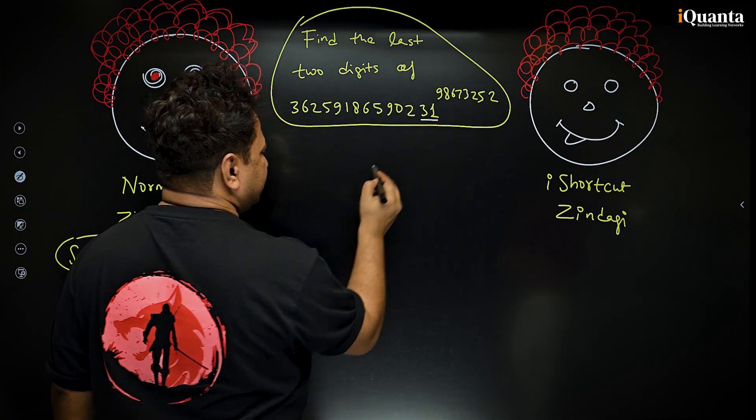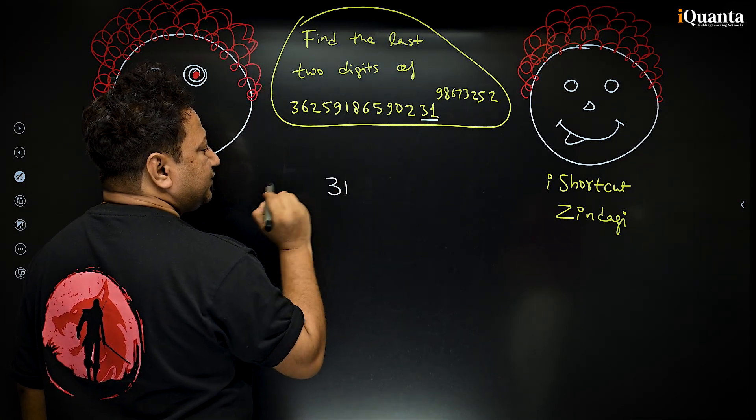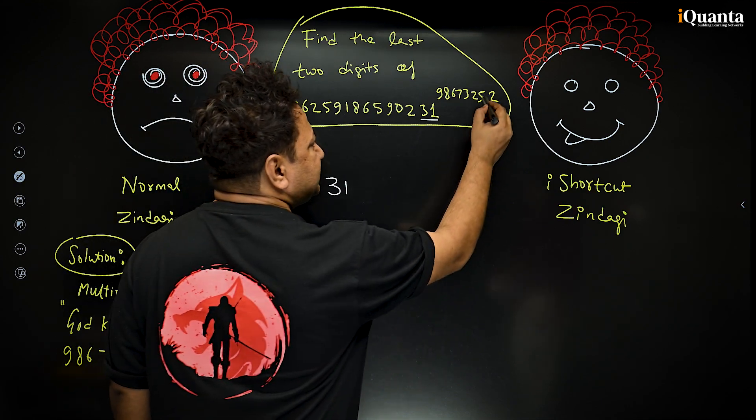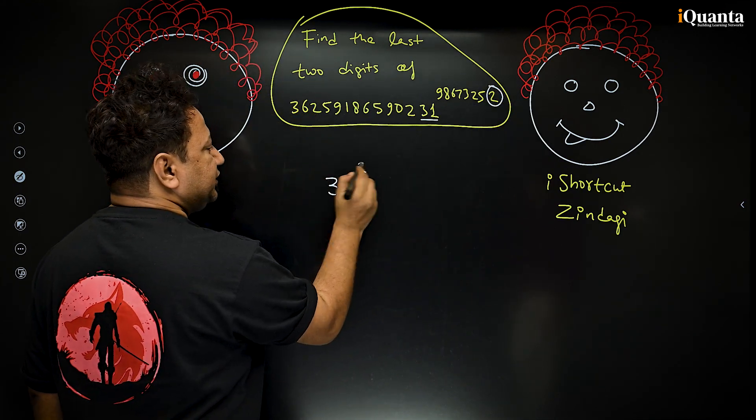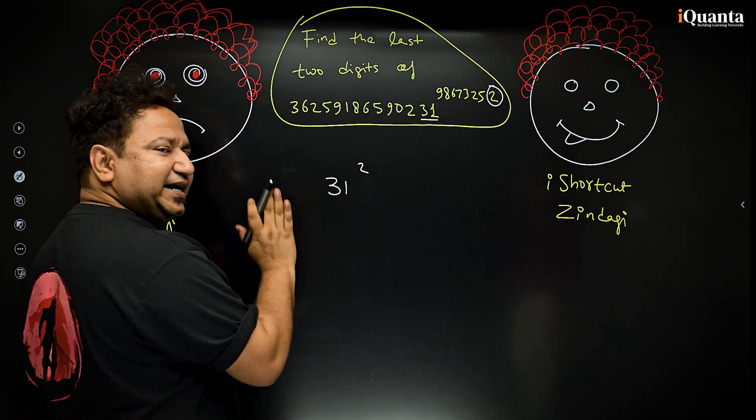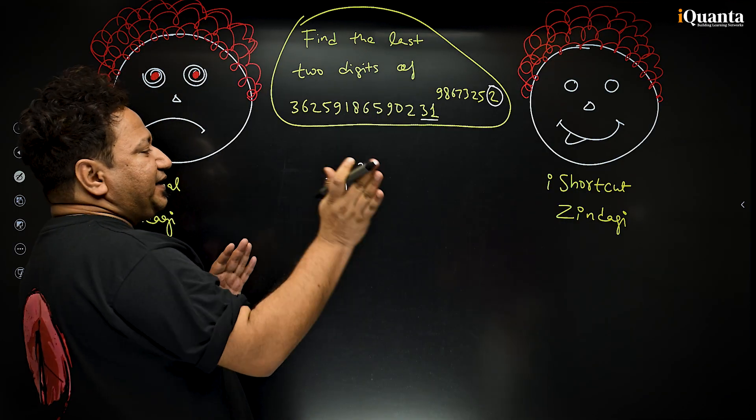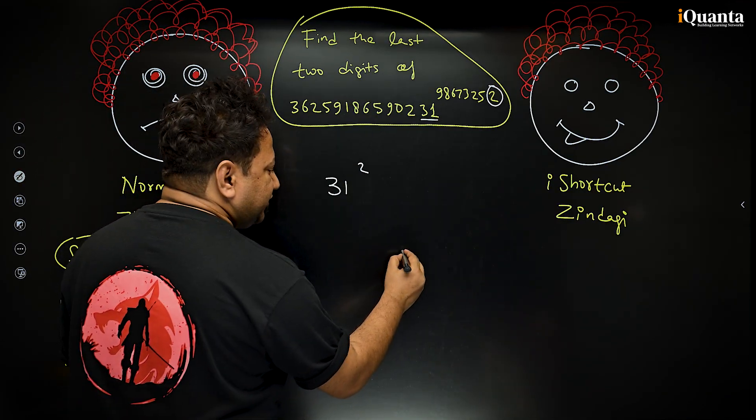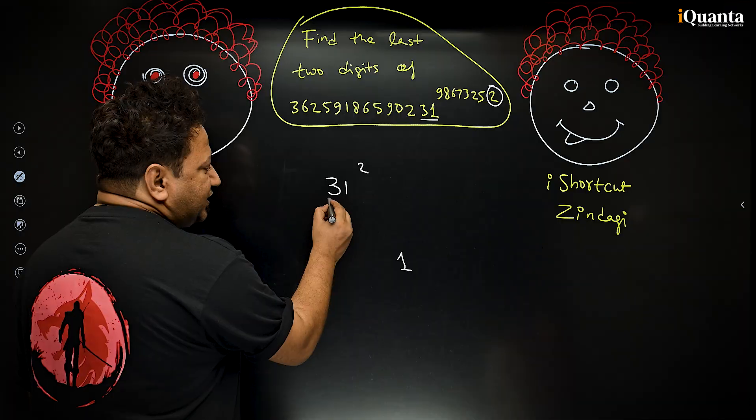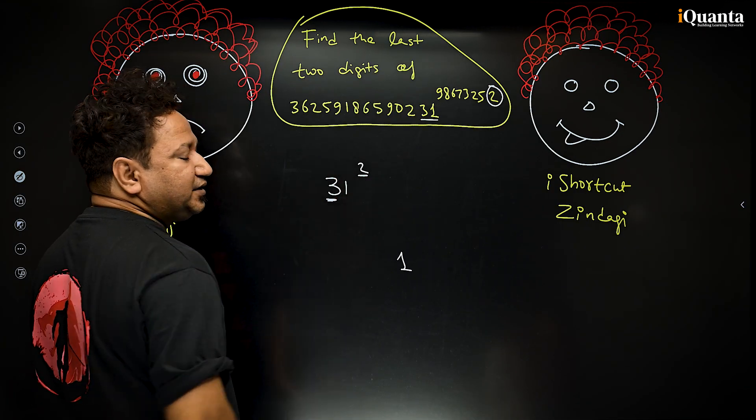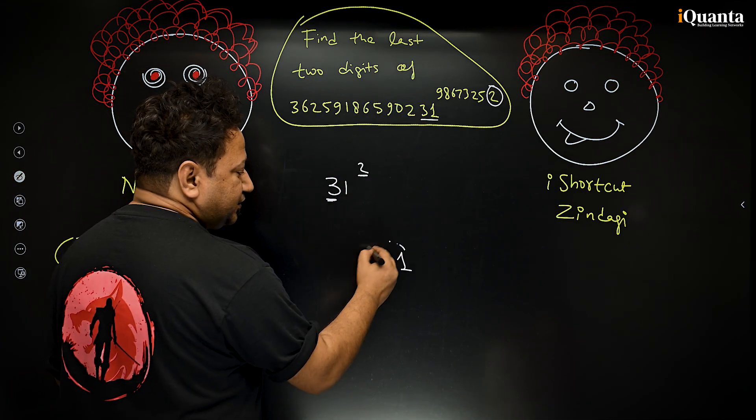That is 31. Just write 31. And last digit of the power, that is 2. Just write 2 here, and that's all. So if a number ends at 1, whatever power it is raised to, it will end with always 1. And this number multiplied by this number is 6. And that is the answer.